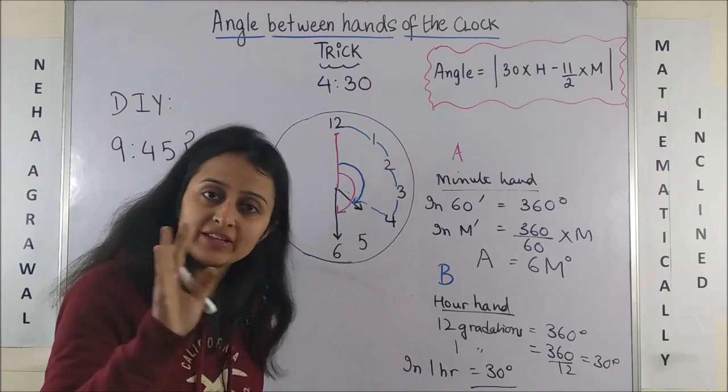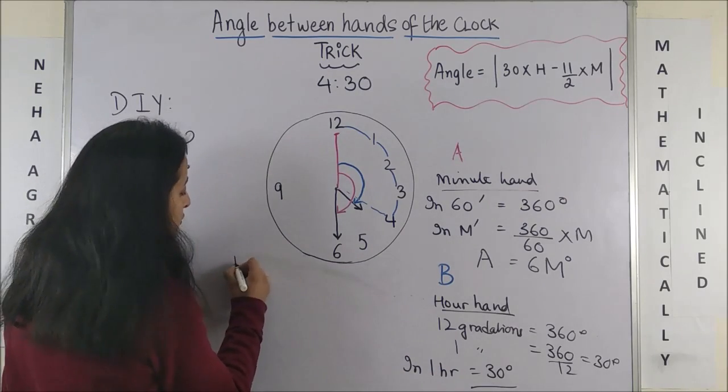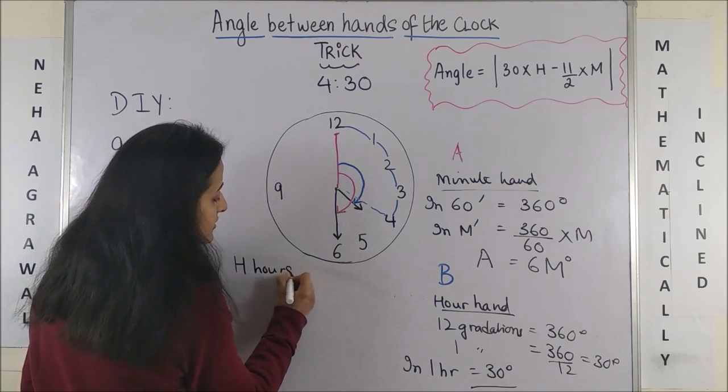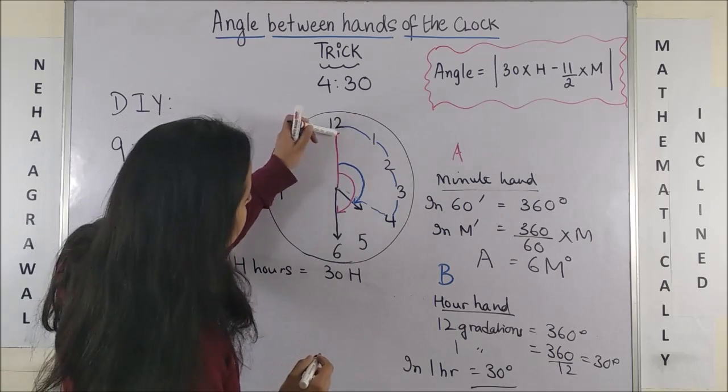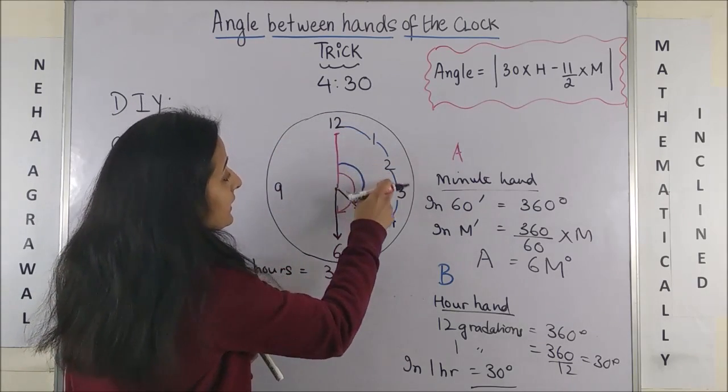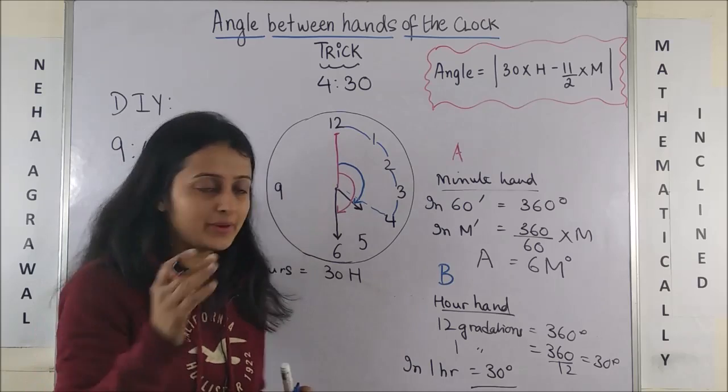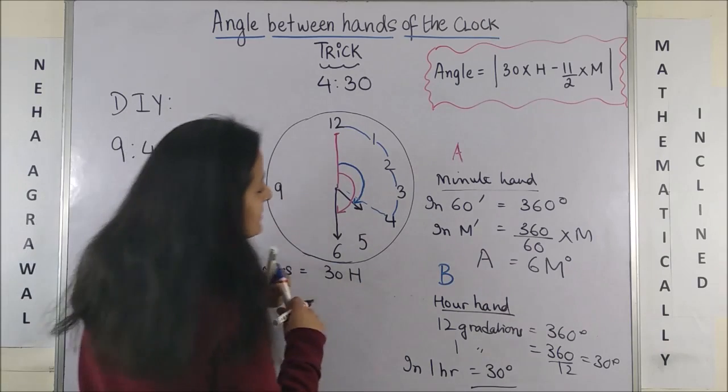So this means in 1 hour, it covers 30 degrees, from 1 o'clock to 2 o'clock because my hour hand only moves 1 gradation. Obviously, in 1 hour, it is moving 30 degrees. So in certain H hours, it's going to move 30H degrees. That means from 1 to 4, I'm going to move 30 and 4 times, so 120.